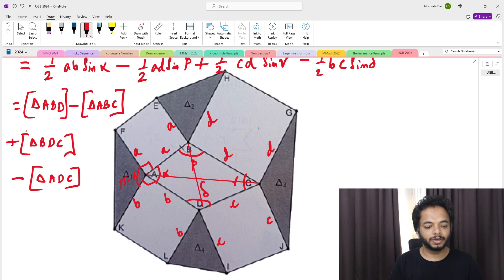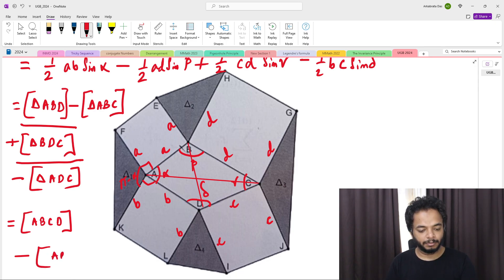Now if you look at here, triangle ABD and ABDC will sum up to the area of the quadrilateral ABCD. And this minus triangle ABC and minus triangle ADC, they will also sum up to the area of quadrilateral ABCD, and thus they are cancelling out to give us a 0. So this was the easiest problem out of all the questions.